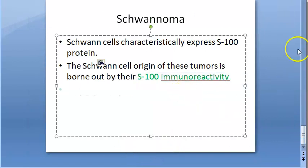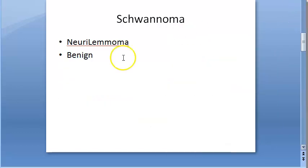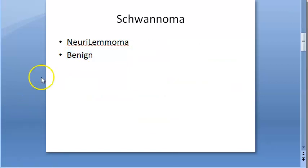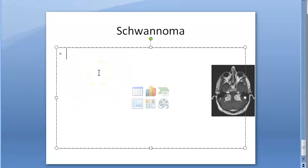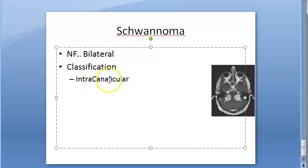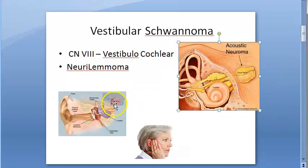If there is neurofibromatosis, the schwannoma will be bilateral. The classification includes: intracanalicular — when confined to the internal auditory canal — then small, medium, and large sizes based on extent.